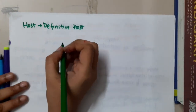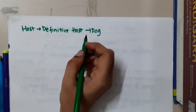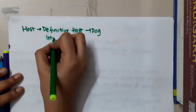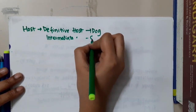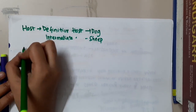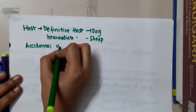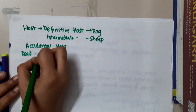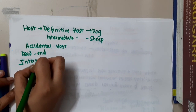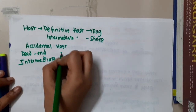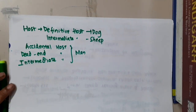The definitive host of hydatid cyst is the dog. The intermediate host is sheep. Men can be an accidental host, dead end host, or intermediate host.